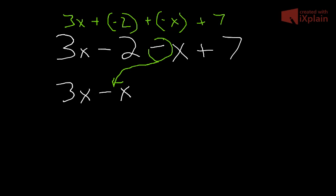So, this negative right here is the same as plus a negative x. And, let's move the minus 2 down here, and we'll keep the plus 7 here on the end.